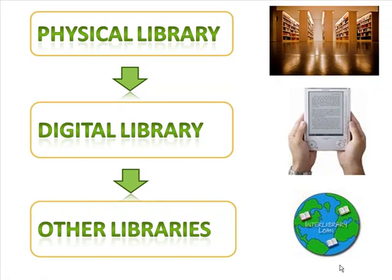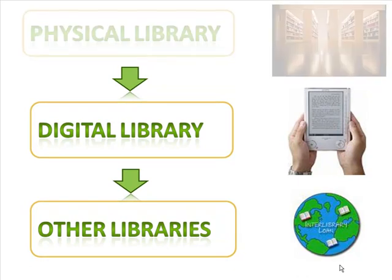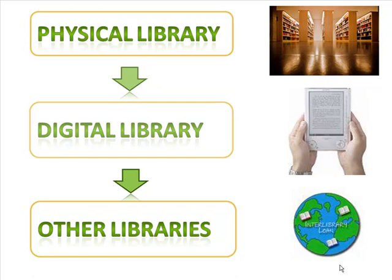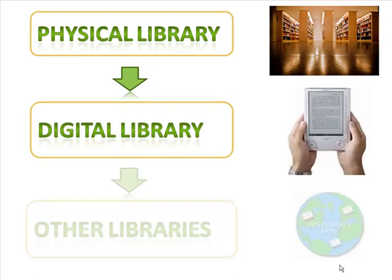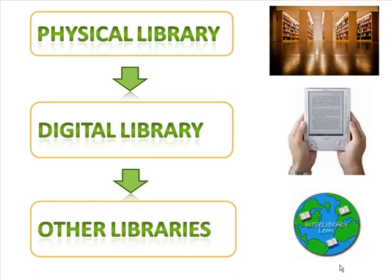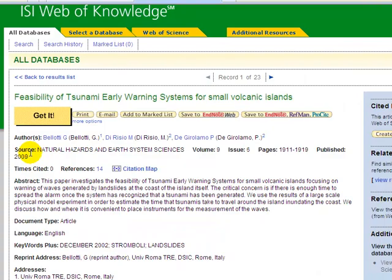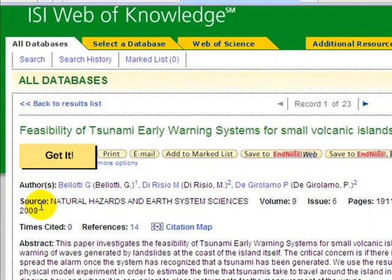Regardless of the type of database, libraries frequently ensure that their users can locate any item identified by one, whether it is in their physical collection, their digital collections, or in other libraries. In these instances, you will often see a 'Get It' or 'Find It' button provided by the library.